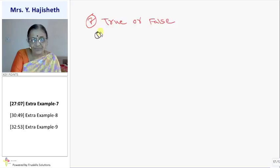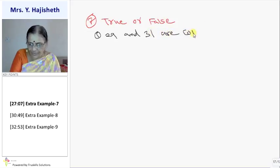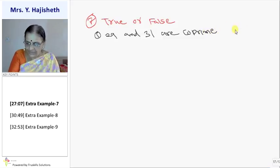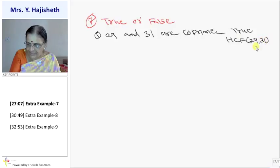First is, 29 and 31 are co-prime. You tell me, is it true or not? Yes, it is true. Why it is true? Because HCF of both is 1. HCF of 29 and 31 is 1.